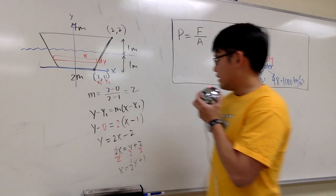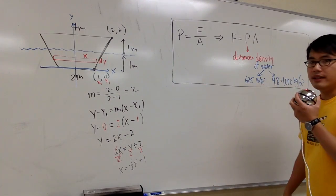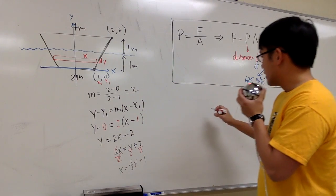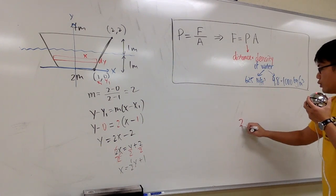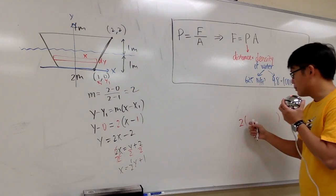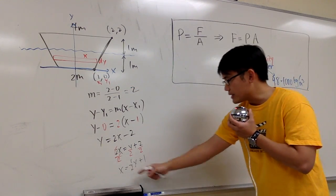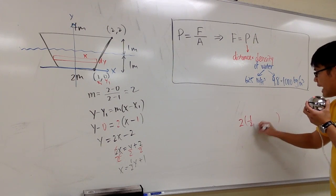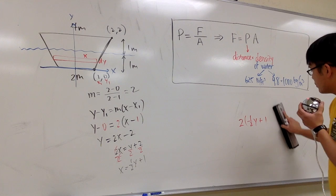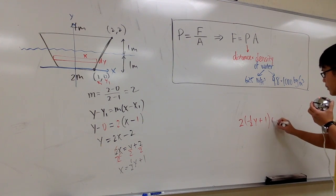Okay, that's x, and I have to run a formula for this area. I need 2x, because the length of this rectangle is 2x. So I put on a 2, and then the x value is that. I'm going to put it down, 1 half y plus 1. That's the x value in terms of y. And then multiply by dy.